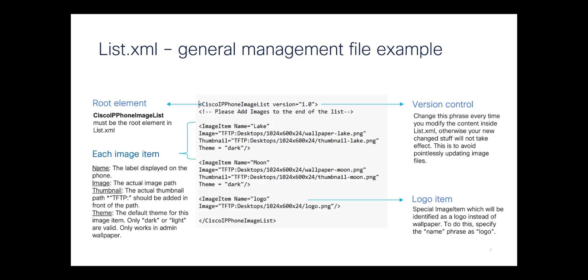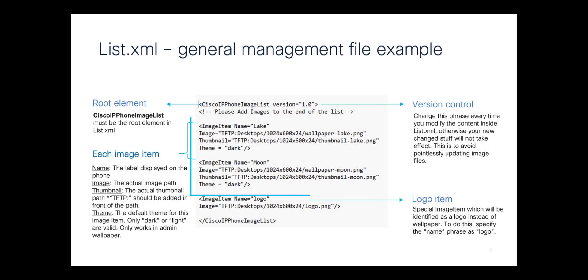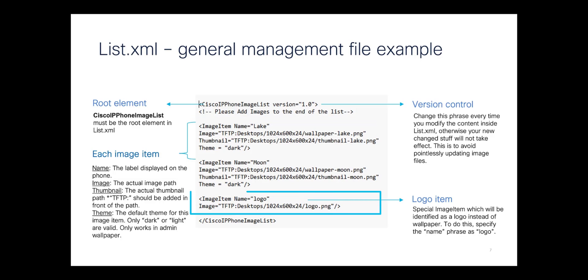This is the structure of the list.xml. At the top is the version control. In the middle, we have two custom wallpapers. And then at the bottom, we have the optional logo.